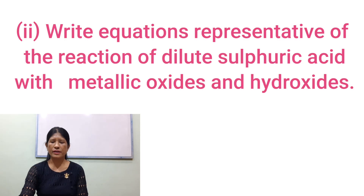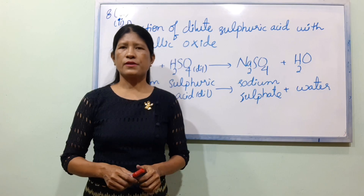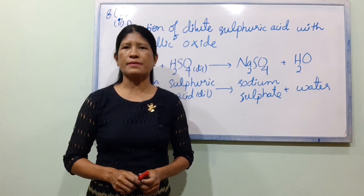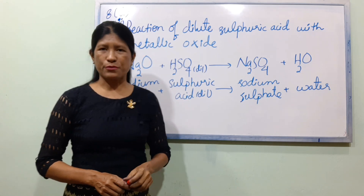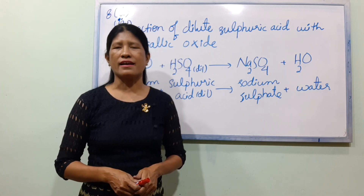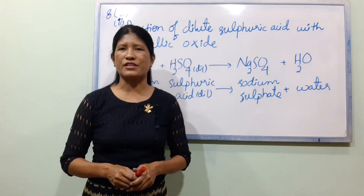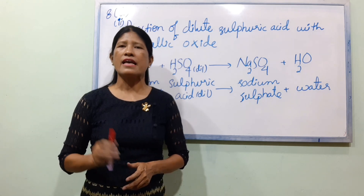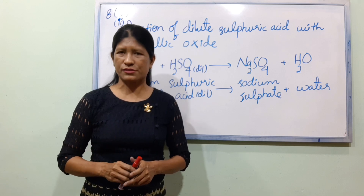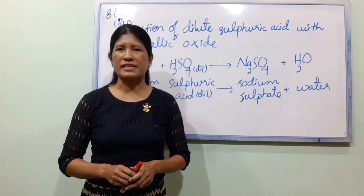Number two: write equations representative of the reaction of dilute sulfuric acid with metallic oxides and hydroxides. If you have any questions, you can answer the question.